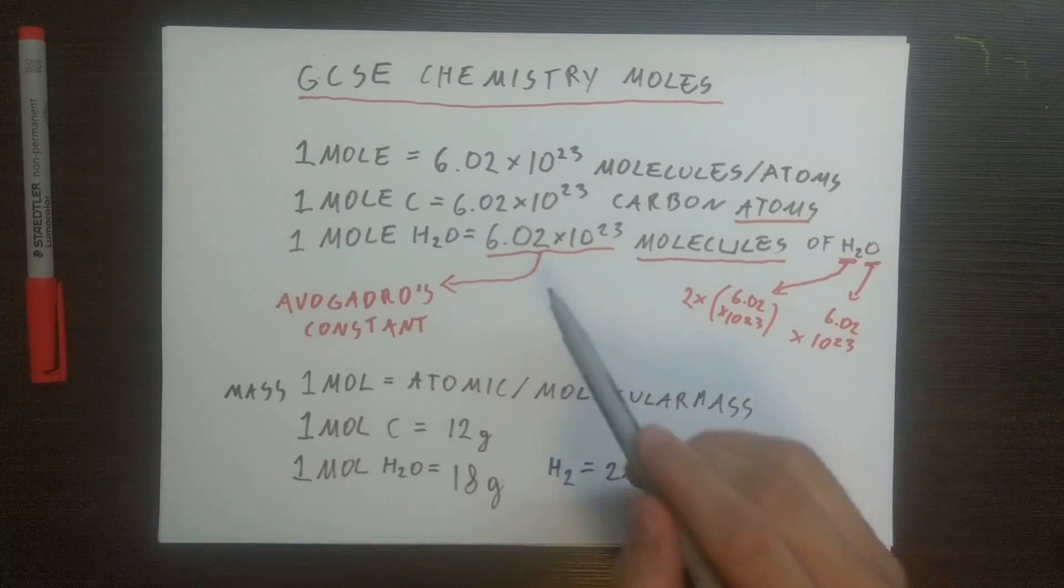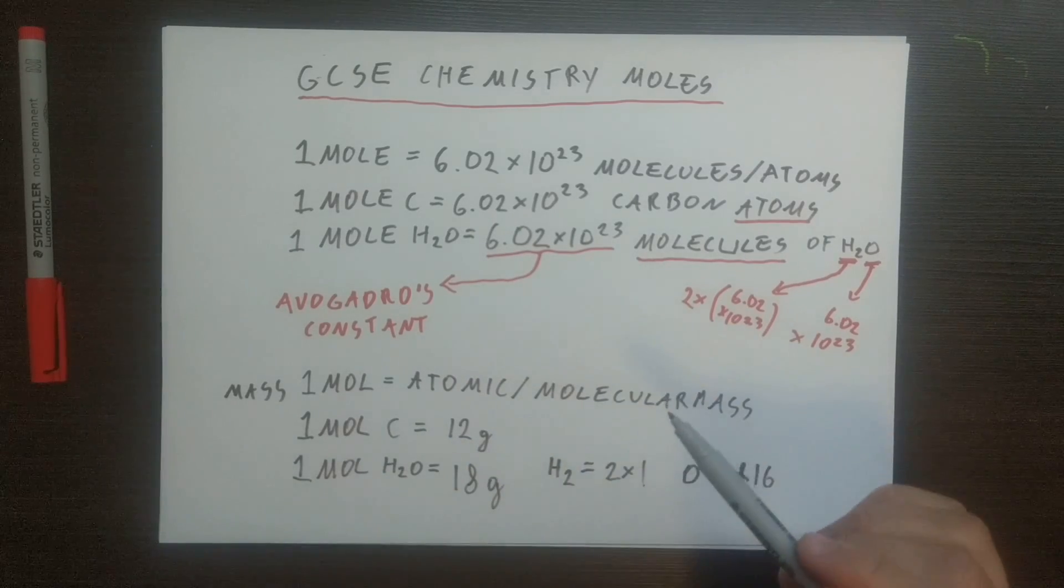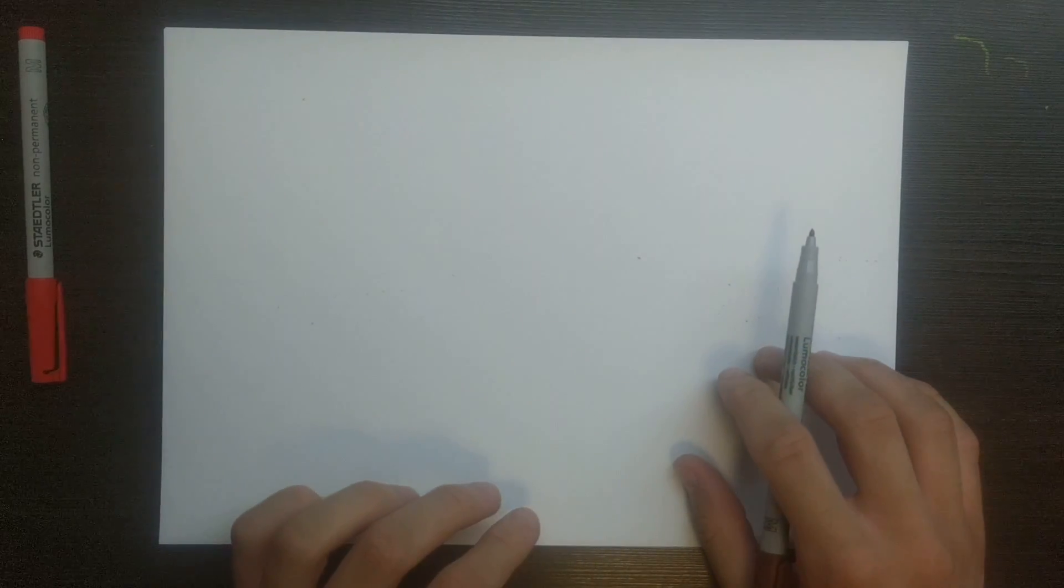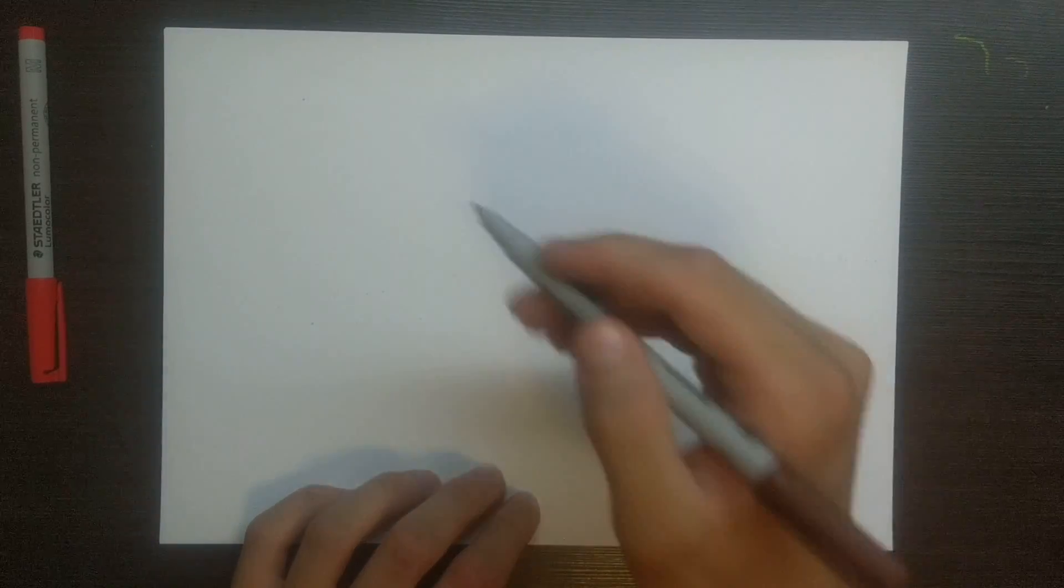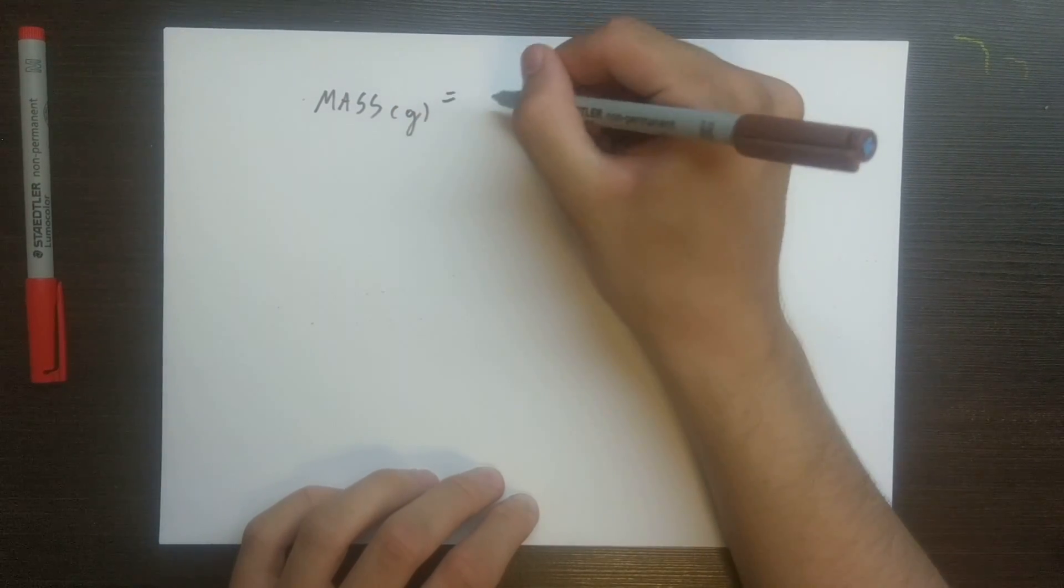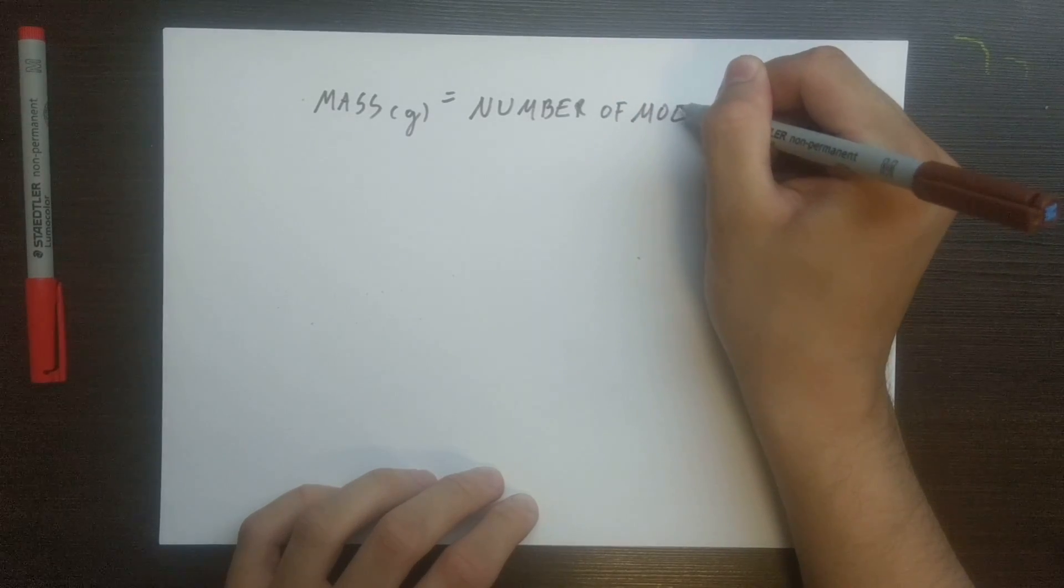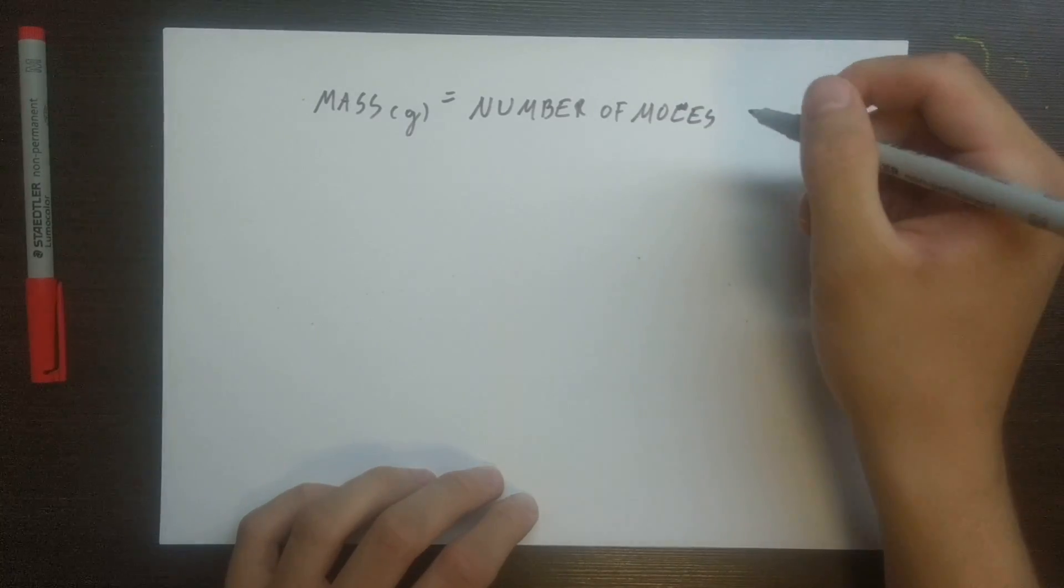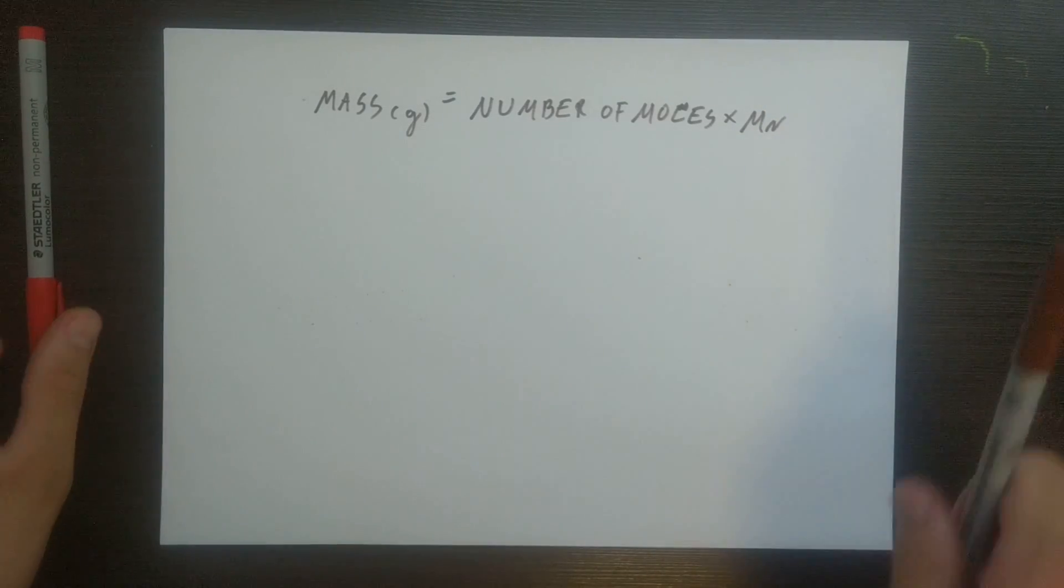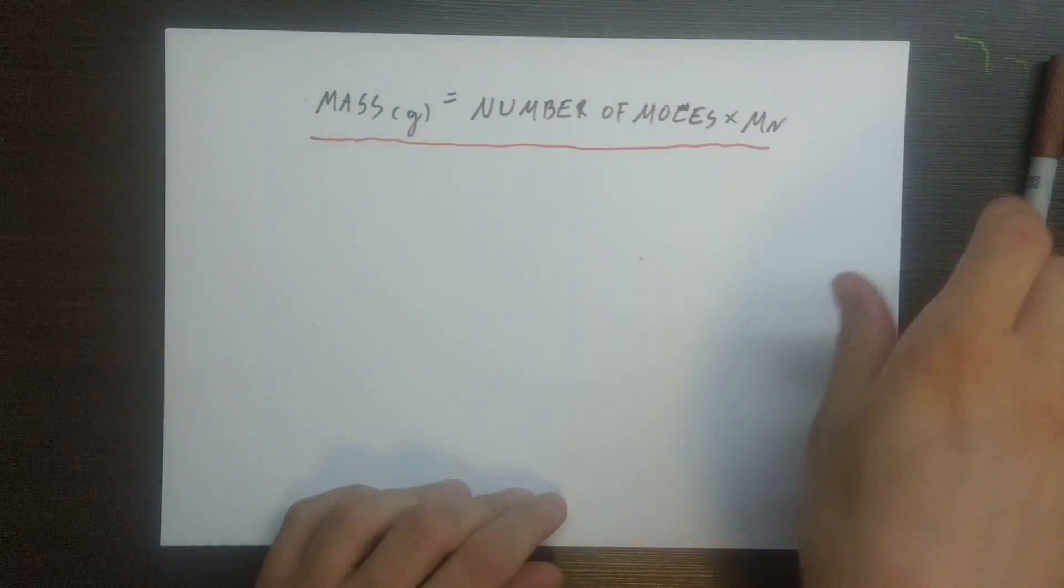That's why one mole of H2O is equal to 18. That's why this particular number is so important - it will allow us to predict molecular masses and atomic masses that we need to solve our questions. Now let's move on to some equations. By thinking like this, by this logic, mass expressed in grams is equal to number of moles multiplied by molecular or atomic mass.